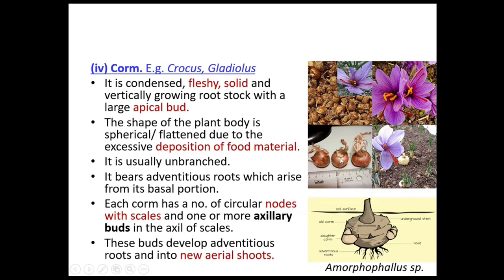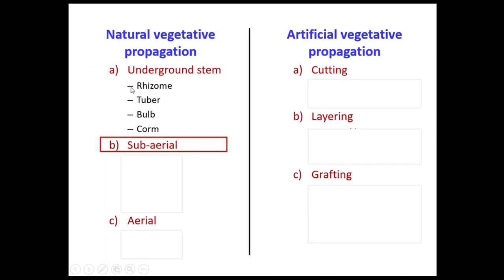To propagate gladiolus, crocus, or Amorphophallus, the plant produces numerous corms underground. You harvest the corms and plant them in soil or other nutrient media, and they will germinate and give rise to the desired plant. Amorphophallus is also an edible vegetable used for cooking. This completes the four types of underground stem: rhizome, tuber, bulb, and corm.